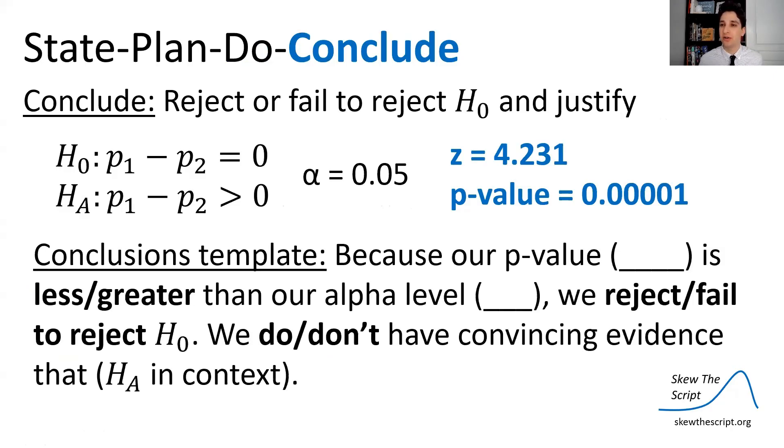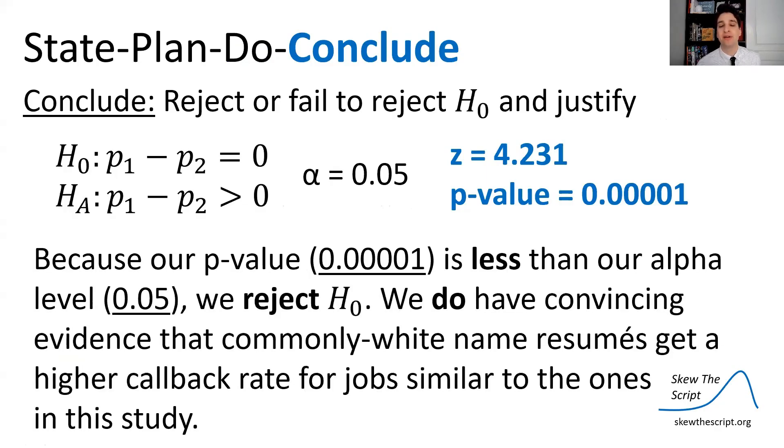Lastly, we draw a conclusion. Here's our conclusion template if you want a nice little succinct way to conclude your study. If I plug in what we know, because our P value 0.00001 is less than our alpha value 0.05, we reject the null hypothesis. We have convincing evidence that commonly white name resumes get a higher callback rate for jobs similar to the ones in this study. It's what we can generalize to.